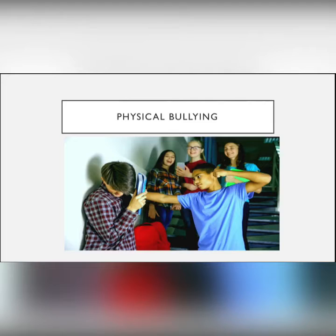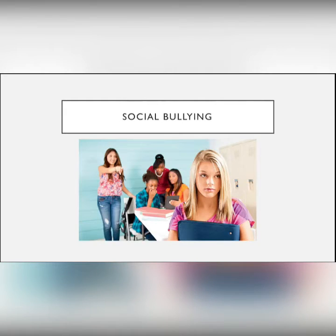Physical bullying is the most common among students. It includes cases of physical aggression, such as kicking, hitting, or pushing, that can be carried out by one or more aggressors. Social bullying is one that seeks to isolate or exclude the child from a social group. This is achieved through social or economic discrimination, indifferent treatment, among others.